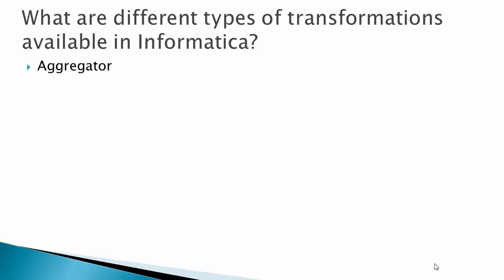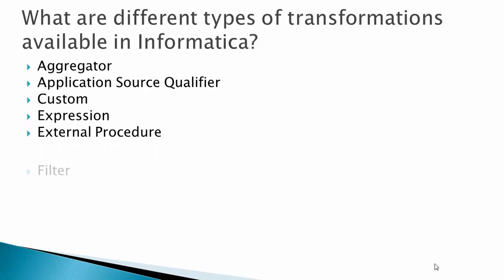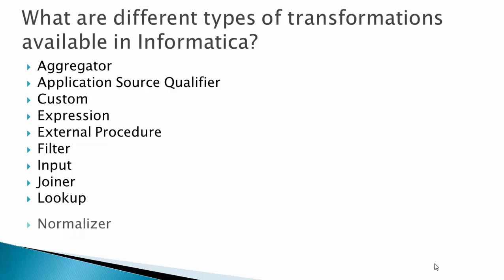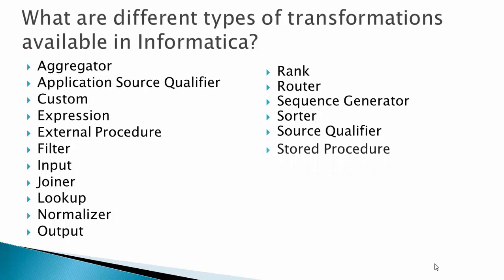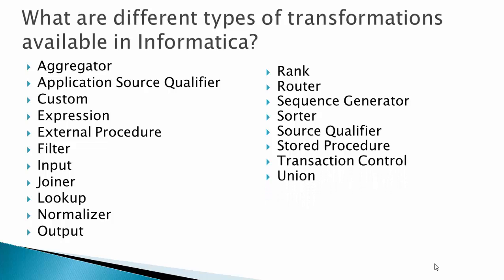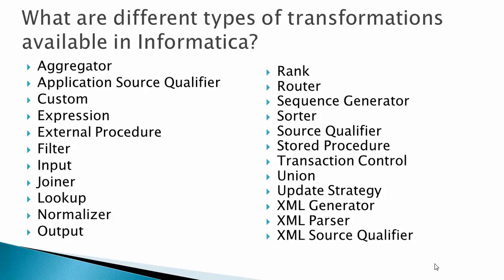There are many transformations available in Informatica PowerCenter. The main ones include: aggregator, source qualifier, custom transformation, expression, external procedure, filter, input, joiner, lookup, normalizer, output, rank, router, sequence generator, sorter, stored procedure, transactional control, union, update strategy, XML generator, XML parser, and XML source qualifier.